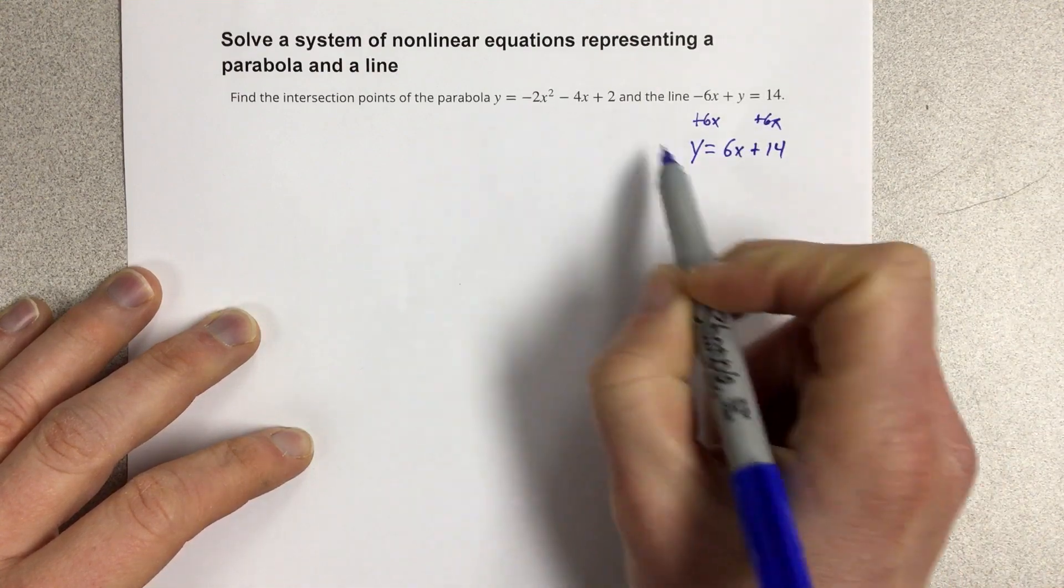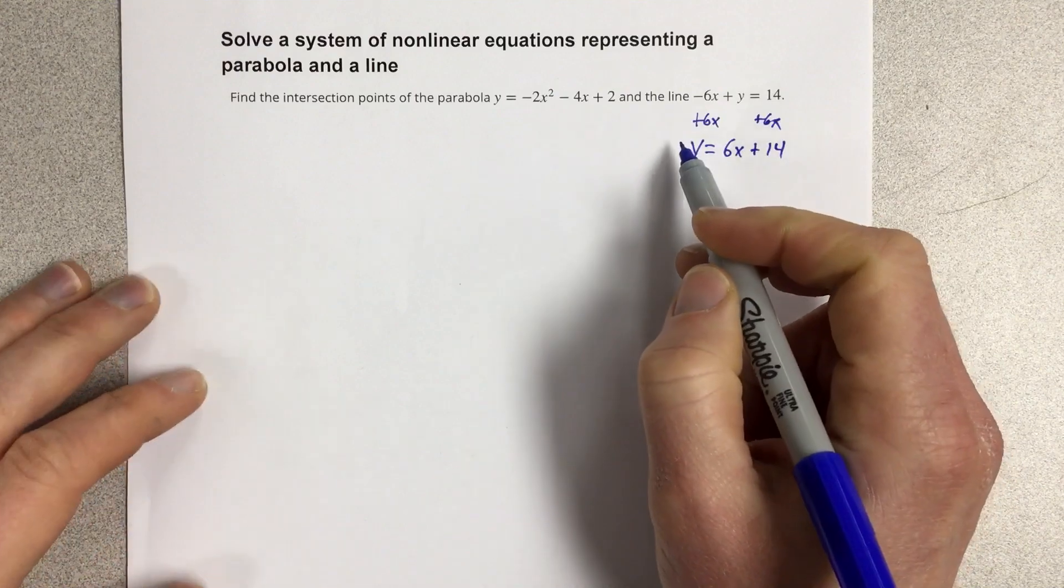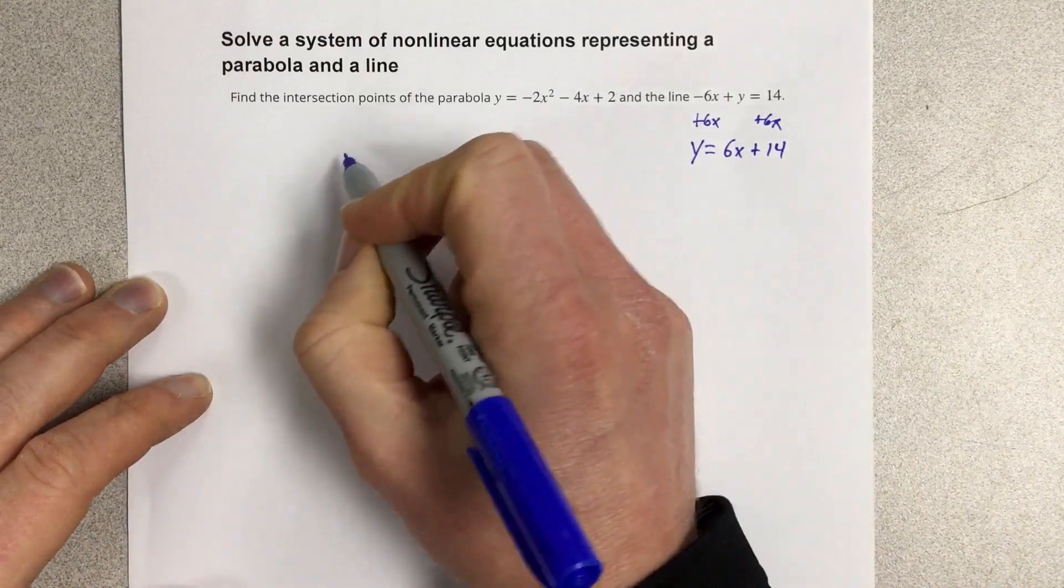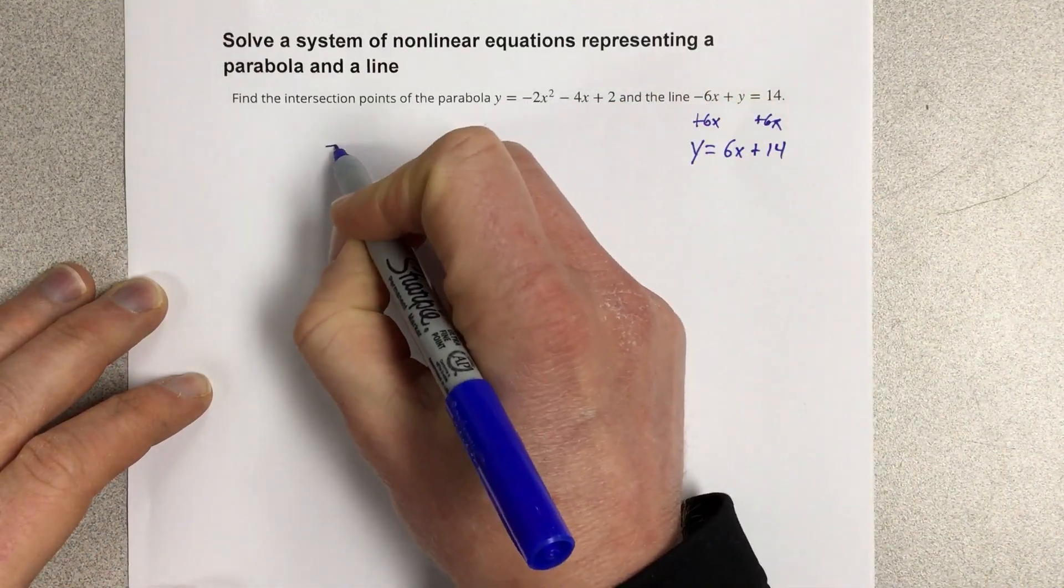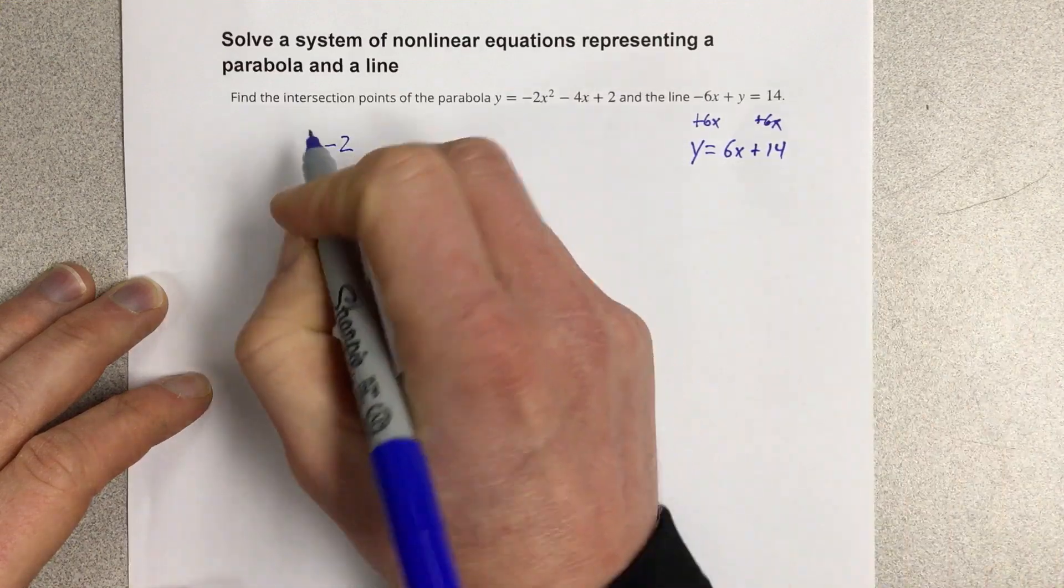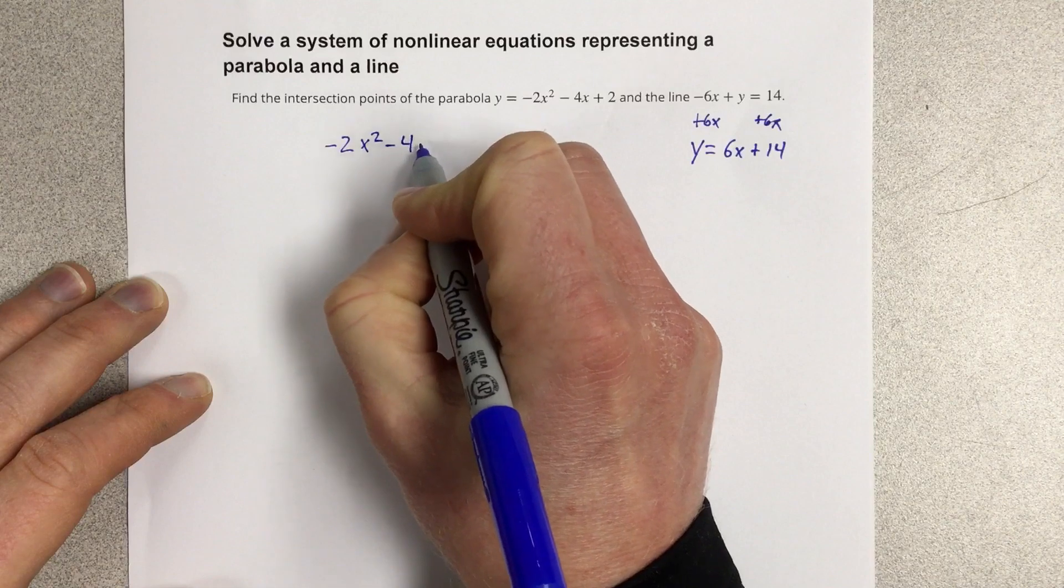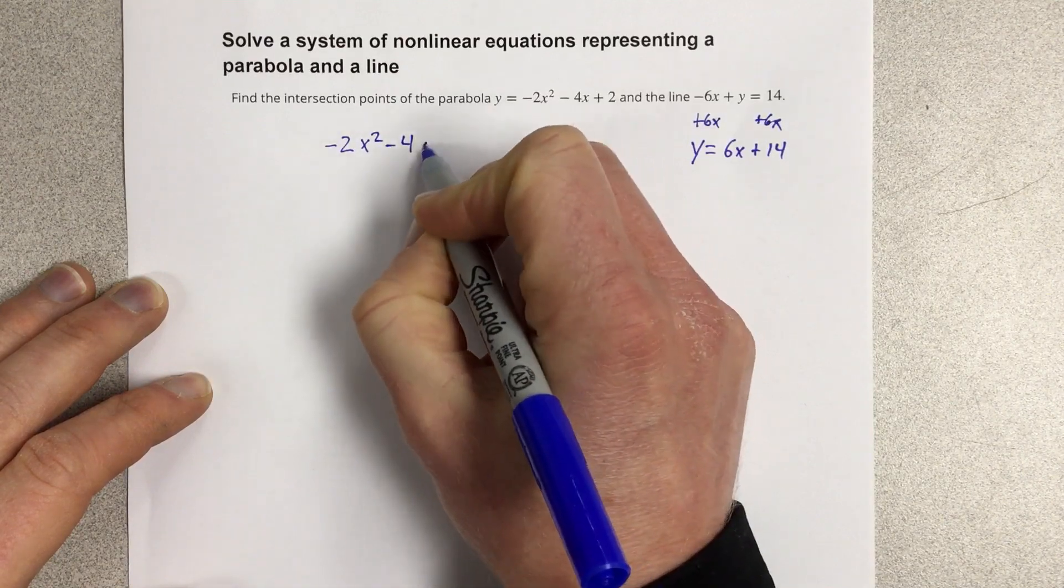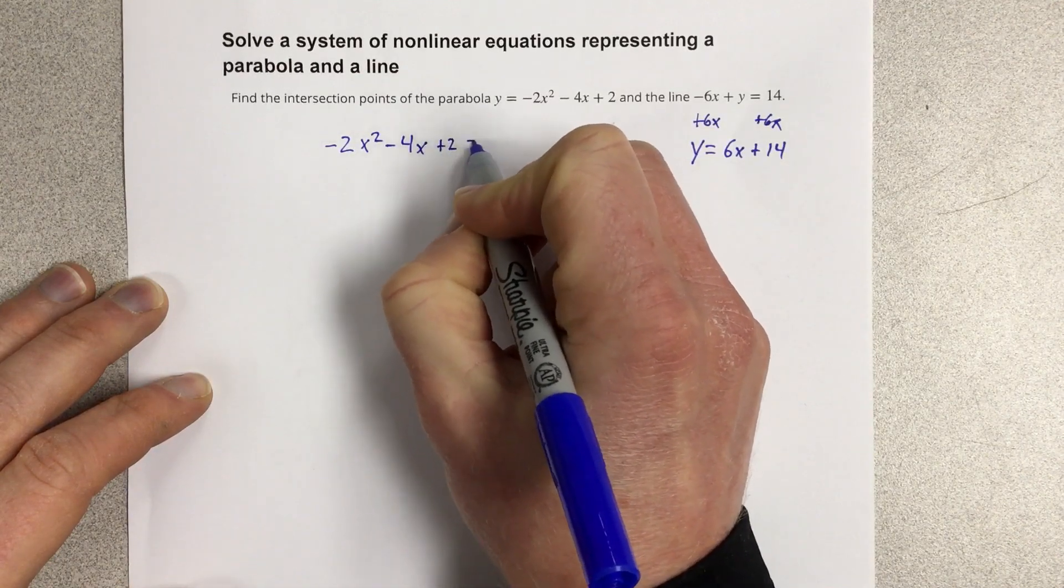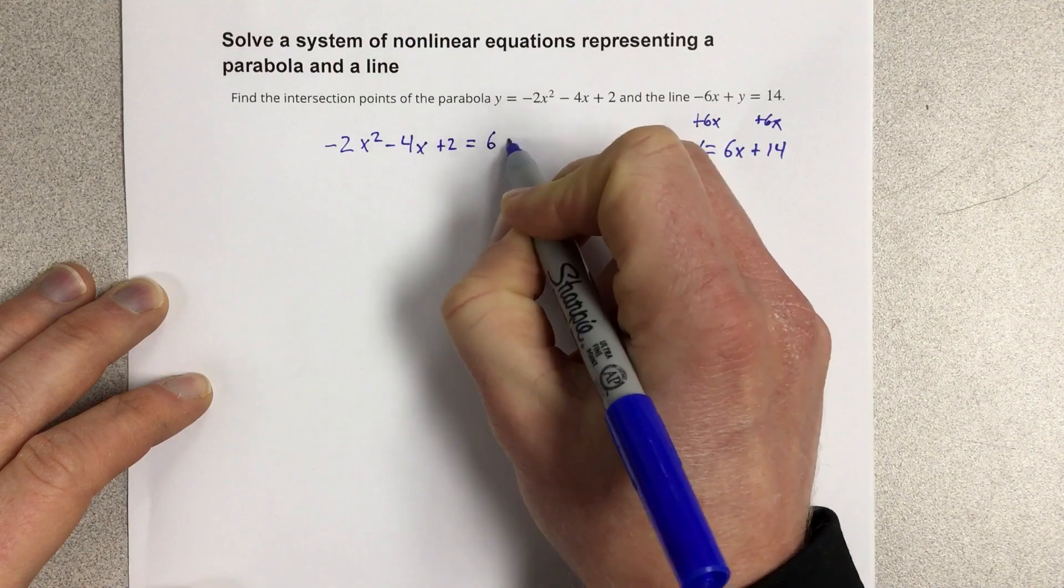Now both equations are set equal to y, so I'm going to set them equal to each other. Because if one equation is equal to y and the other equation is equal to y, then they are actually equal to each other. So negative 2x squared minus 4x plus 2 equals 6x plus 14.